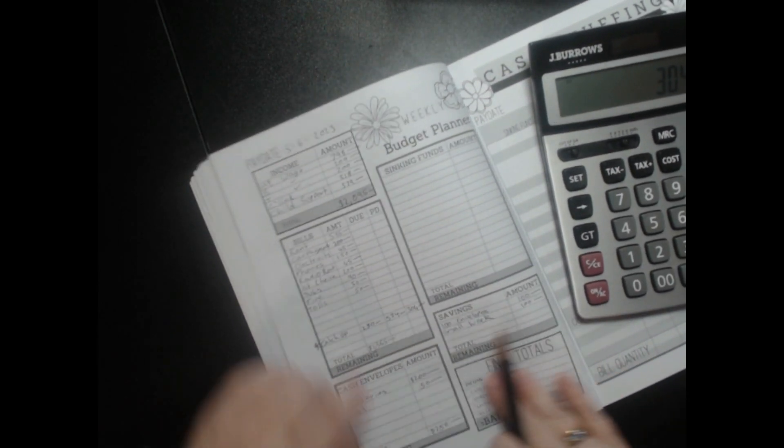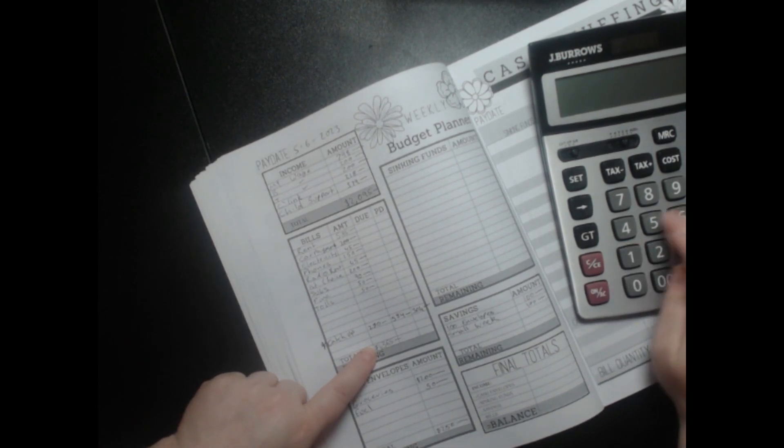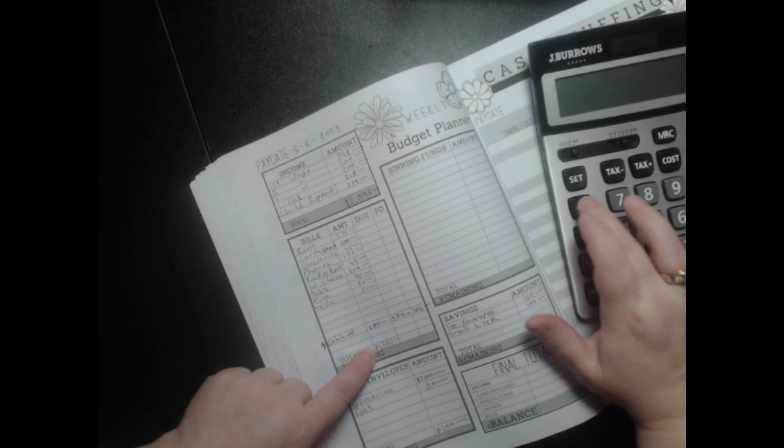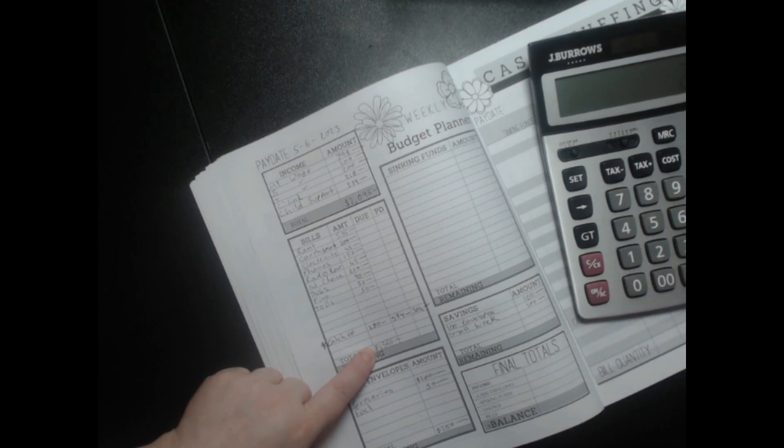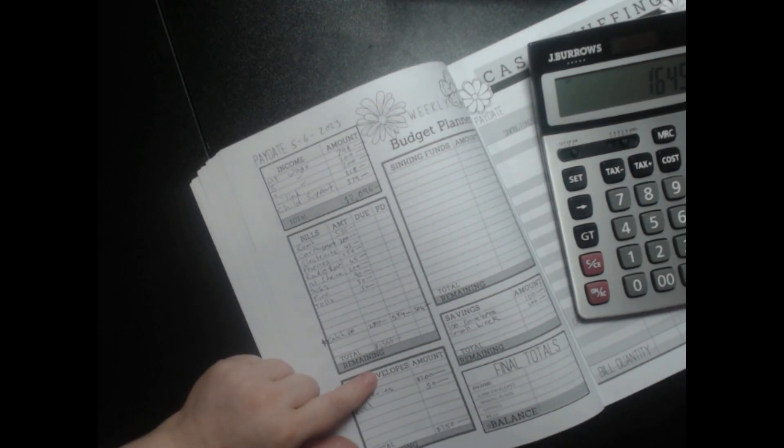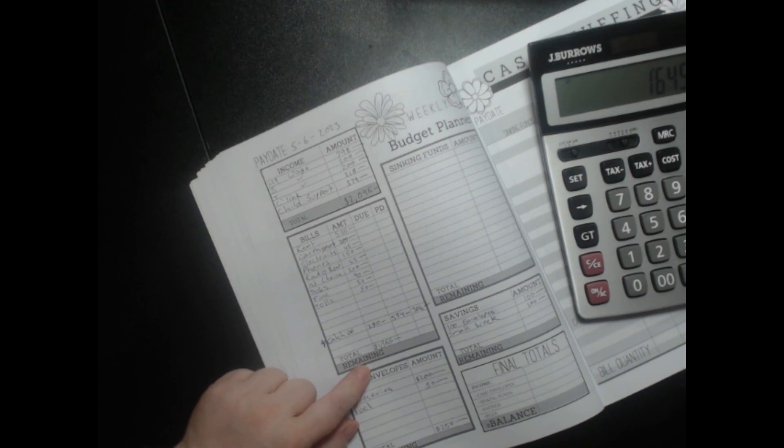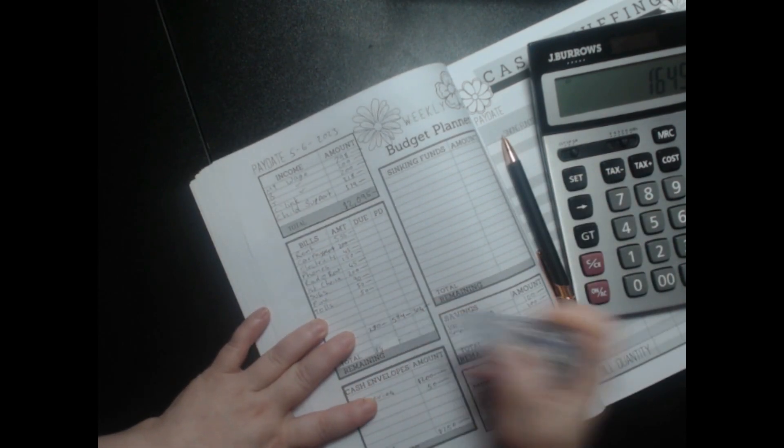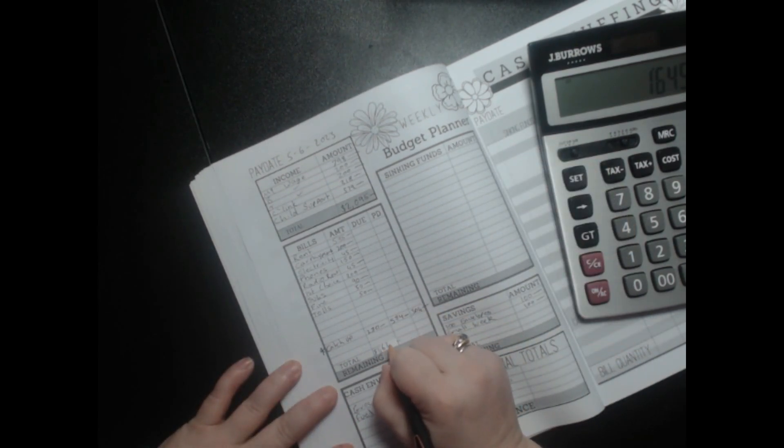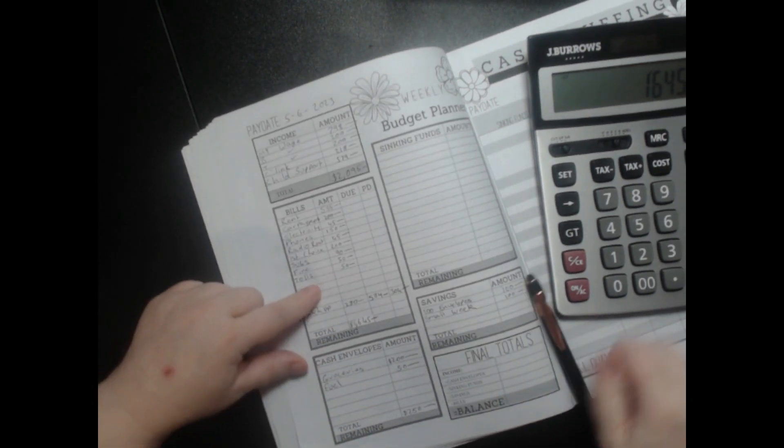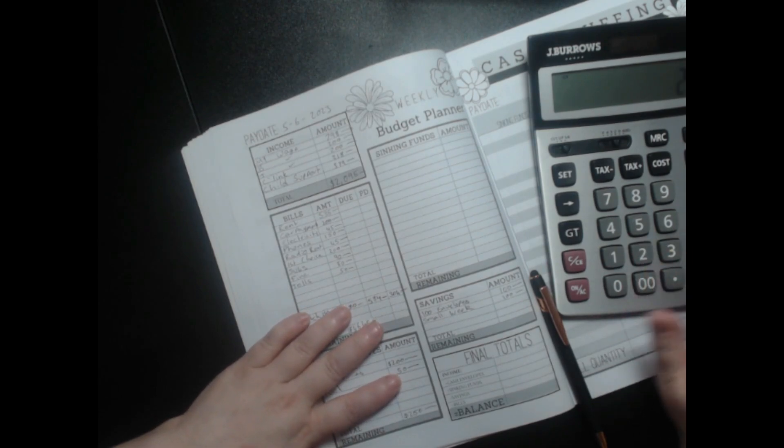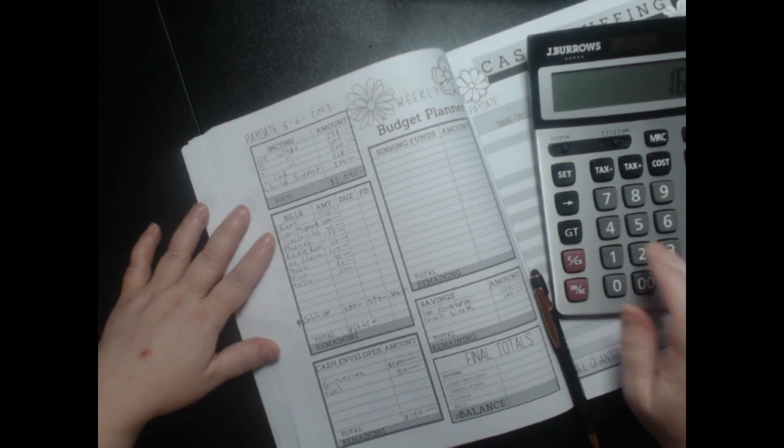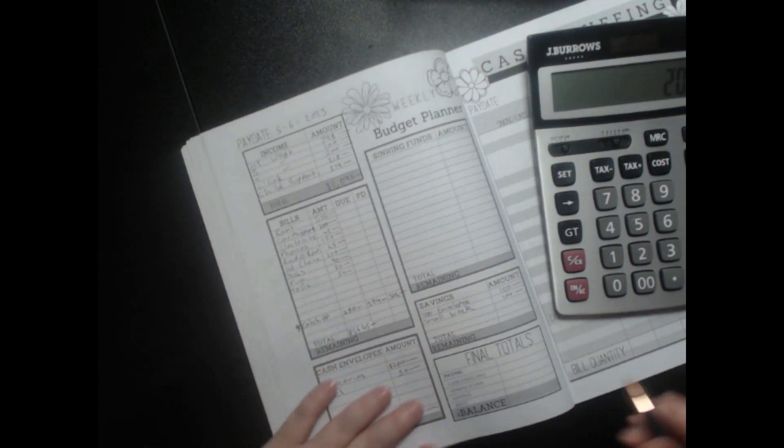1365 plus 280. Just see if my correction tape is close. It is close. 1645. Okay. So 1645, 250, 200. 1645, 250, 200. Okay. So that is the correct amount. So cash envelopes, 250.